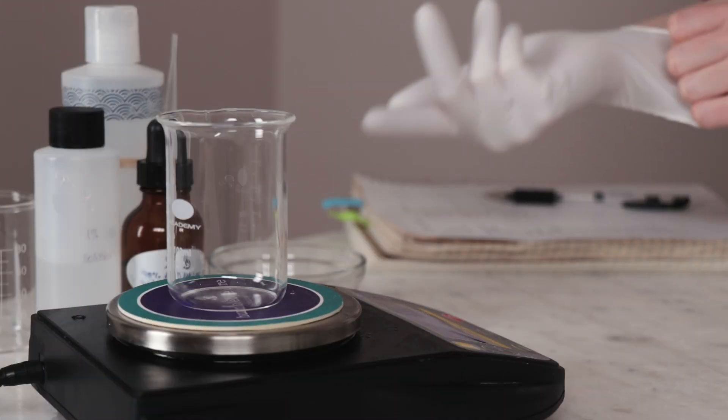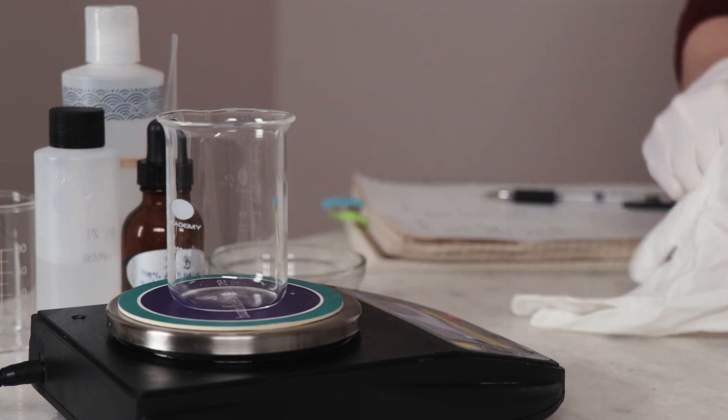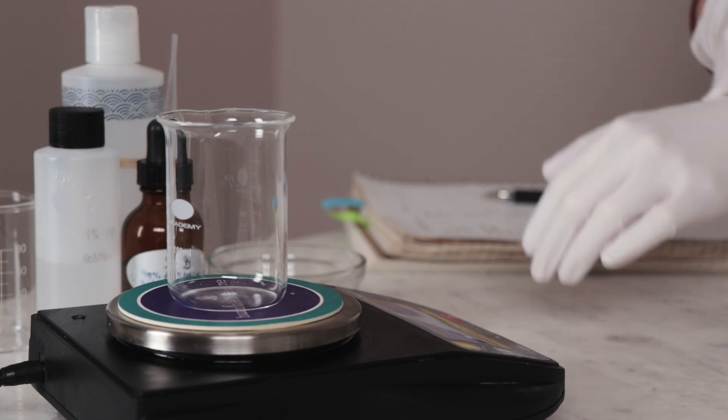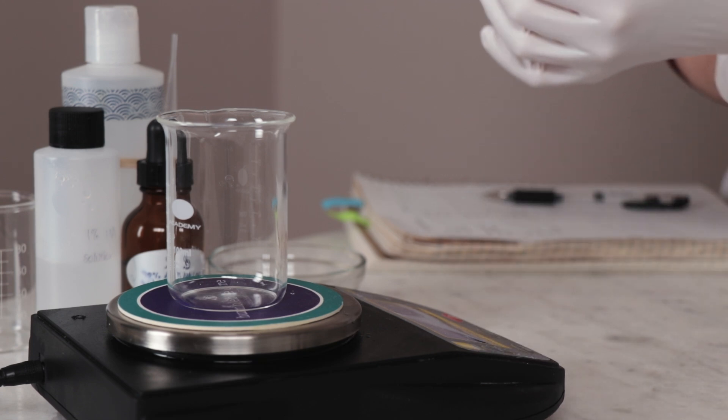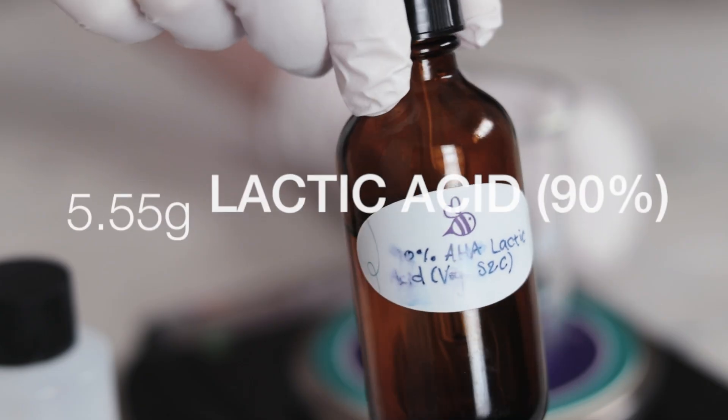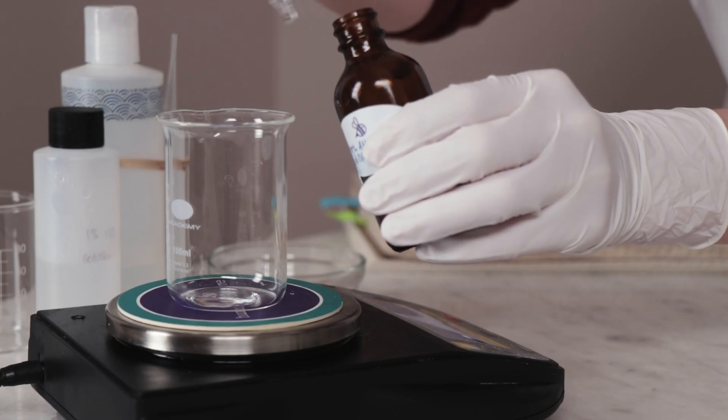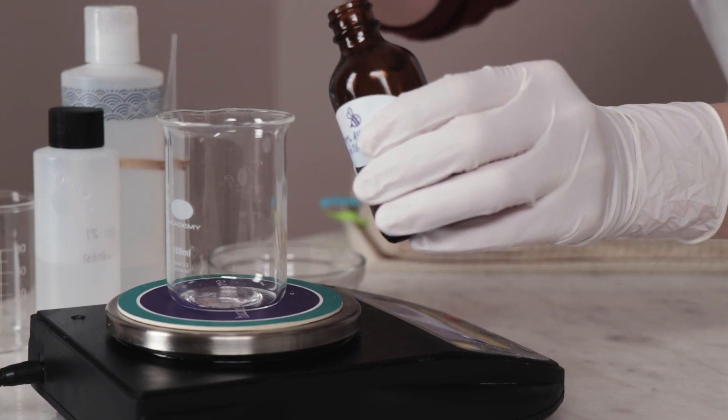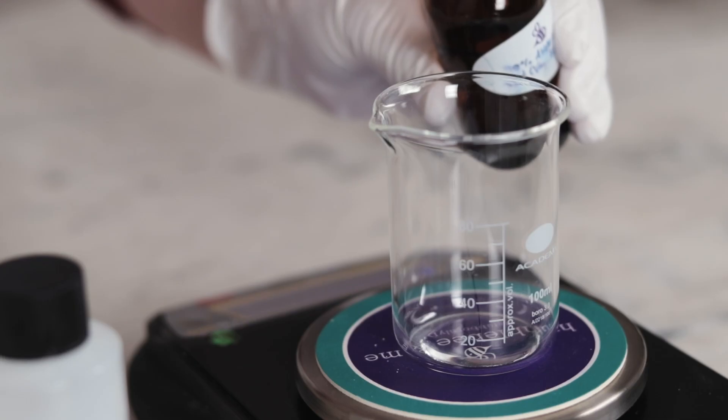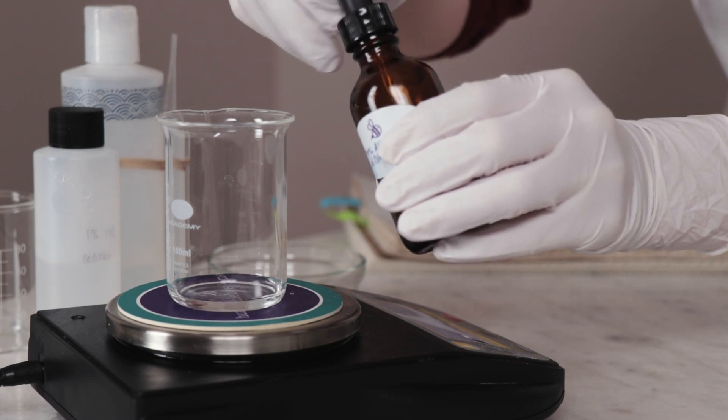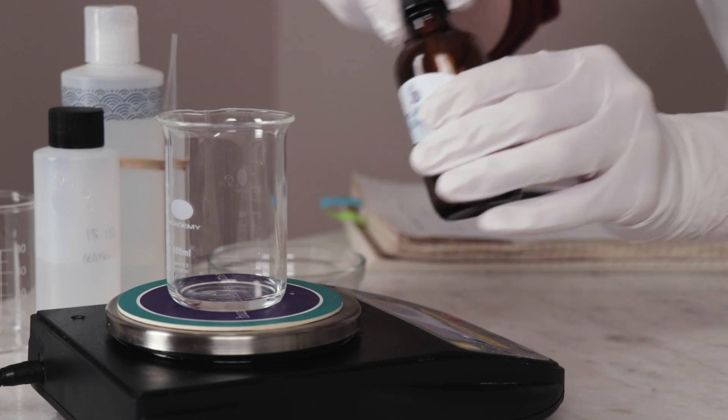Before you begin weighing out the ingredients, put on a pair of gloves and some eye protection. The lactic acid ingredient we are working with today is very acidic, and we don't want to risk it coming into contact with our skin or our eyeballs. The first ingredient we'll weigh out is the lactic acid. You'll need 5.55 grams of a 90% lactic acid solution. If your lactic acid is a different strength, check with your supplier to see what you've got—you'll need to use a different amount, adjusting the distilled water in the formulation as required. I've included the adjusted numbers for an 88% solution in the partner blog post linked in the description box below.